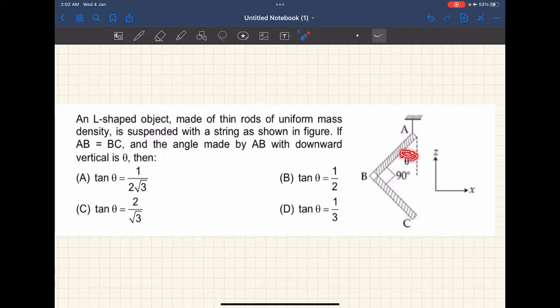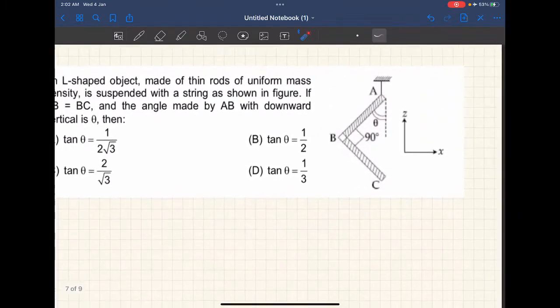The angle that the length AB makes with the vertical of the rod - we need to find the tangent of that theta. All right, so let's just move on to the solving part of it.